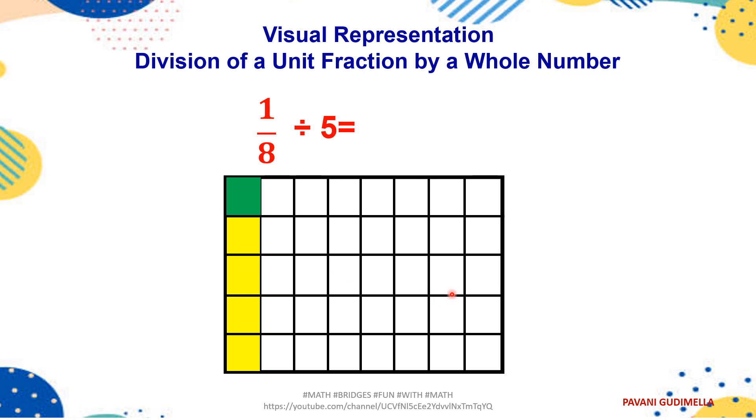So, out of this 40 boxes, only 1 box has been shaded in green. That means it is 1/40. Therefore, the answer when 1/8 is divided by 5, it is 1/40. Now, you check with our previous video, the KCF rule. Keep it as it is the first one. Change the sign into, flip it. 5 becomes 1/5. So, 1/8 into 1/5 is 1/40. So, that is the normal division where you are doing. And here, you are visualizing how we get the division.